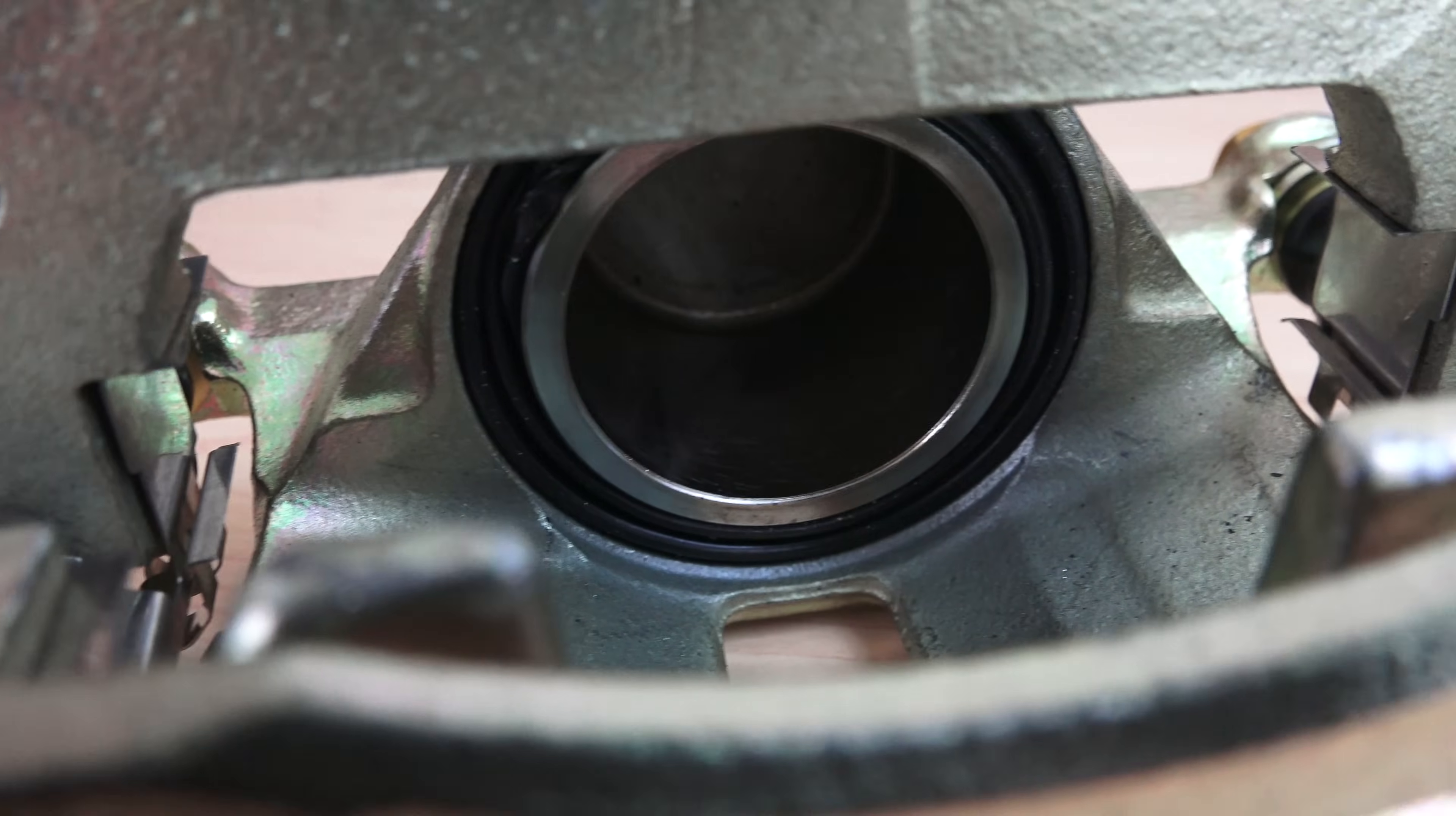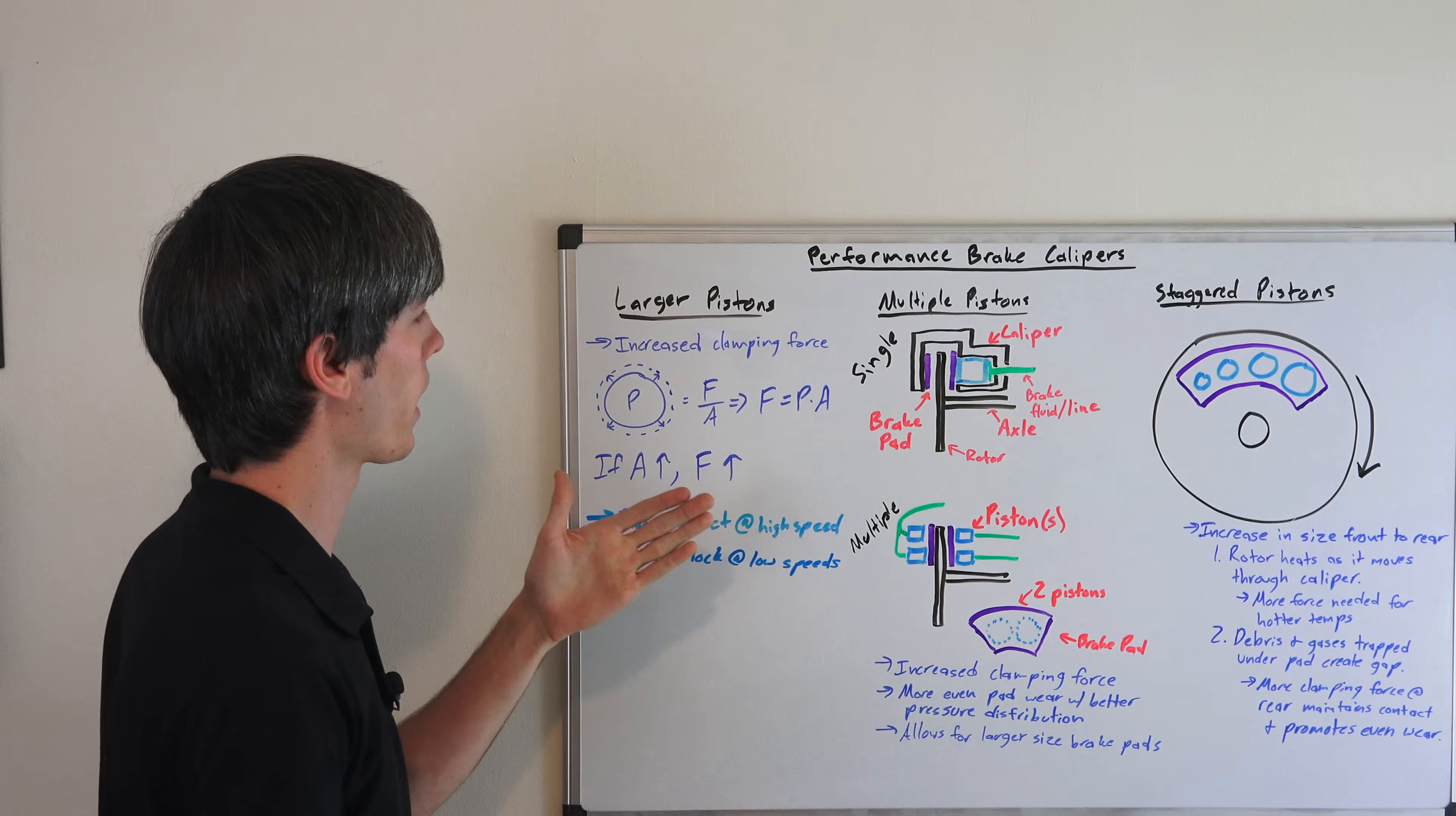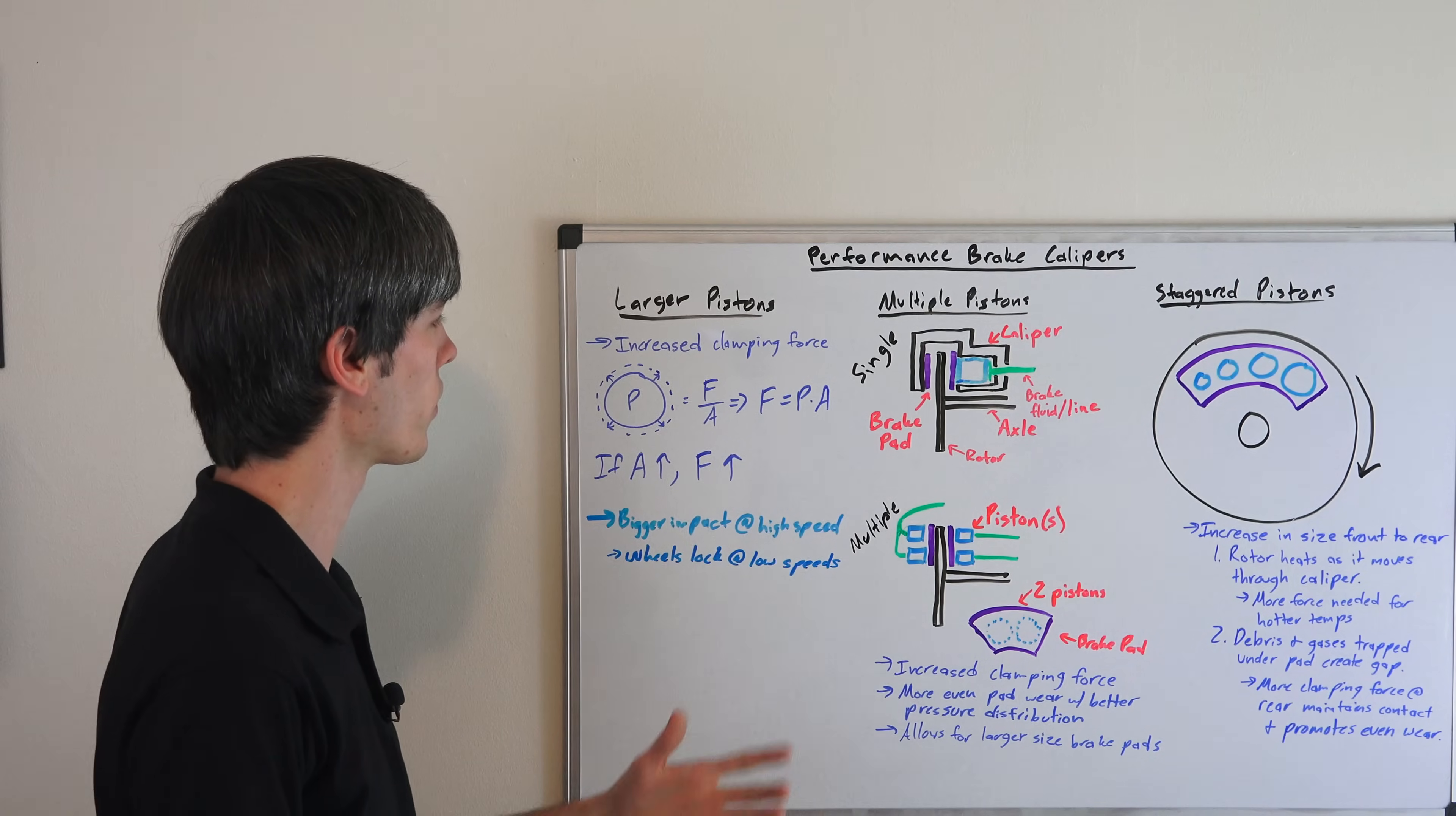Starting with larger pistons, basically the ability to use a larger piston will increase the amount of clamping force you can have. So if you have a certain area, pressure is equal to force divided by area, so the force on that brake pad against the rotor is equal to pressure times area. So if you can increase the area and keep the pressure the same, the braking force goes up. Very simple, easy to understand.